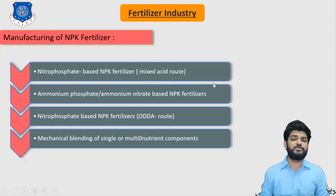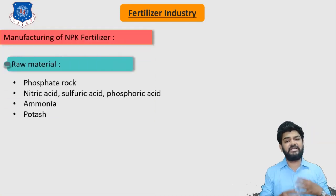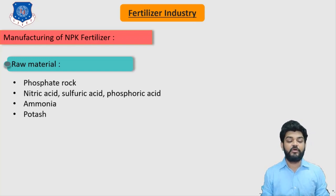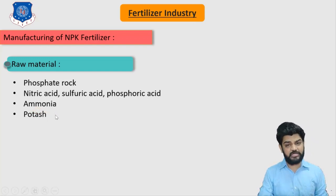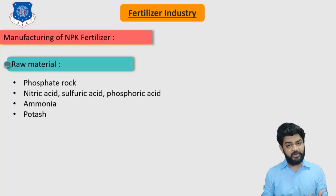The mixed acid route is very important from an exam perspective. The raw materials needed to produce NPK fertilizer include: phosphate rock to provide phosphate; nitric acid, sulfuric acid, and phosphoric acid — collectively known as mixed acid; ammonia as the source of nitrogen; and potash. The quantitative requirement of these raw materials can be varied or changed as per the plant's requirement.